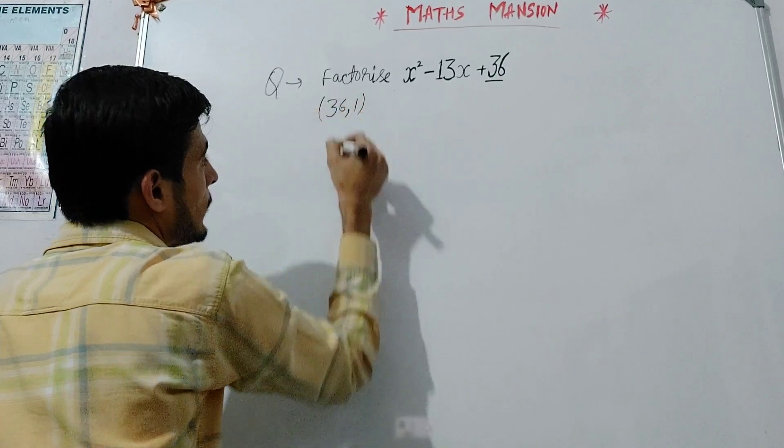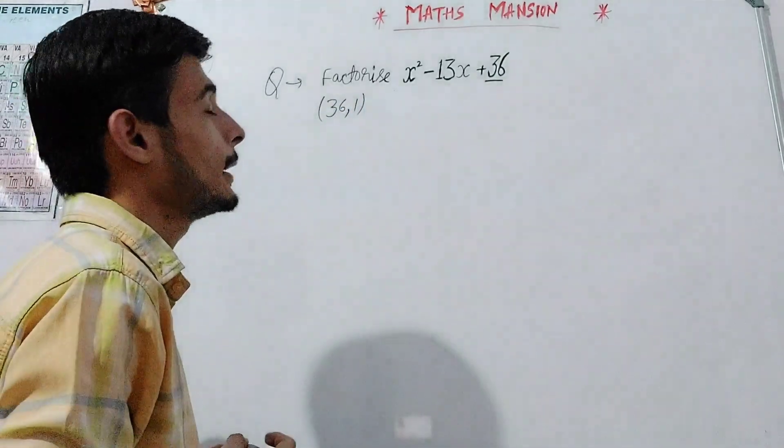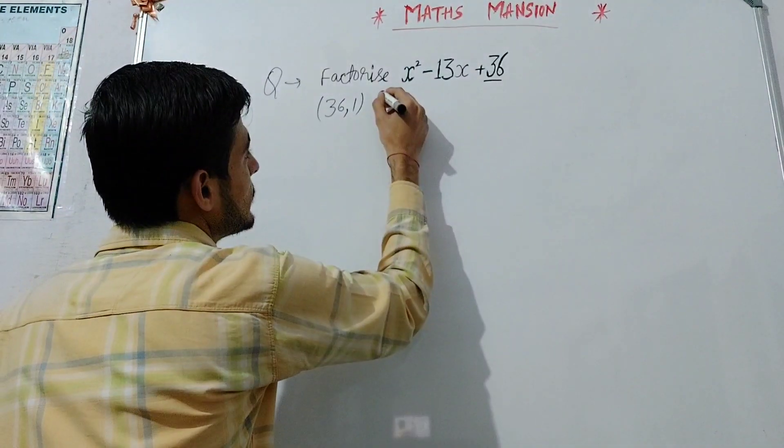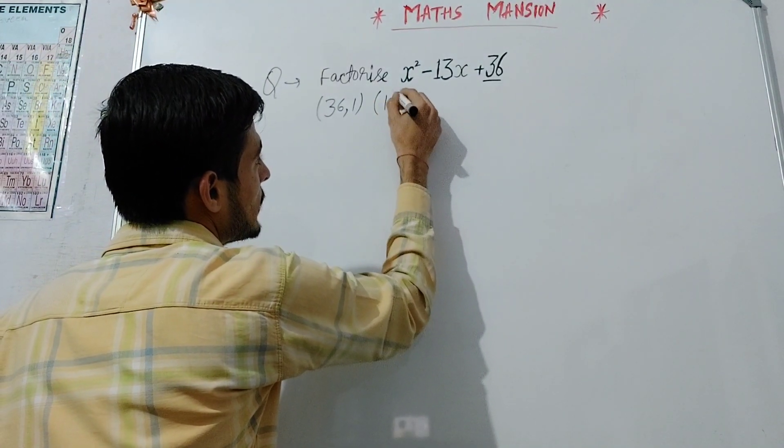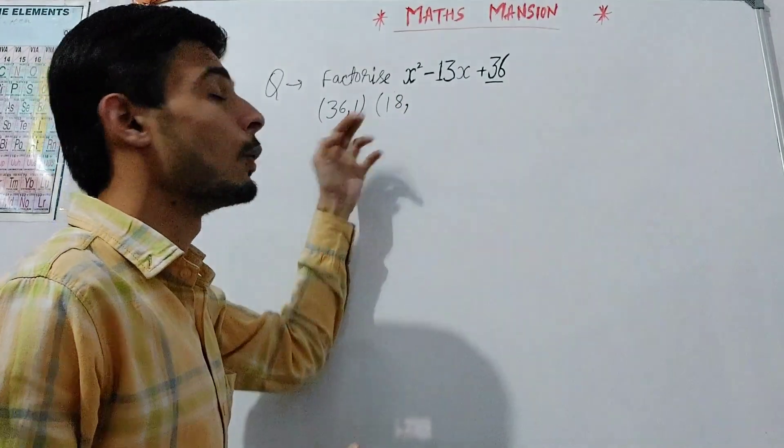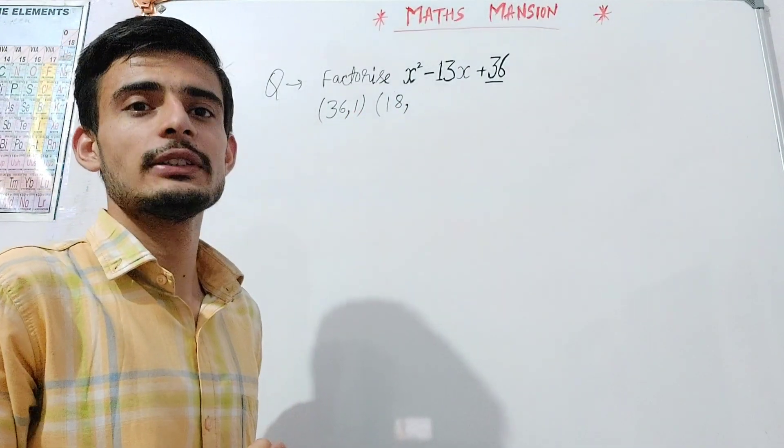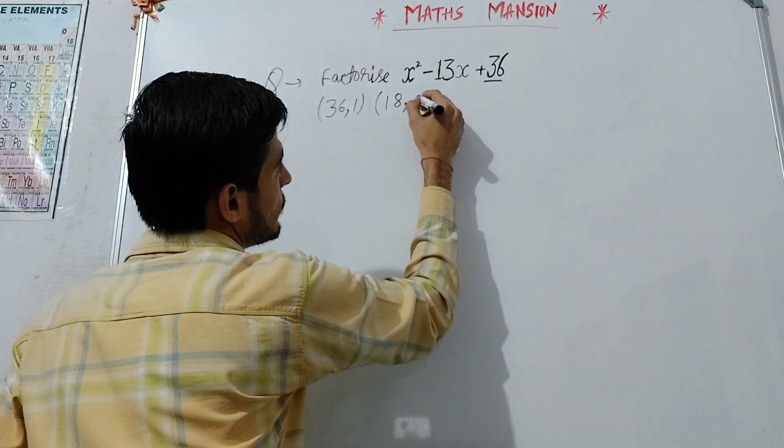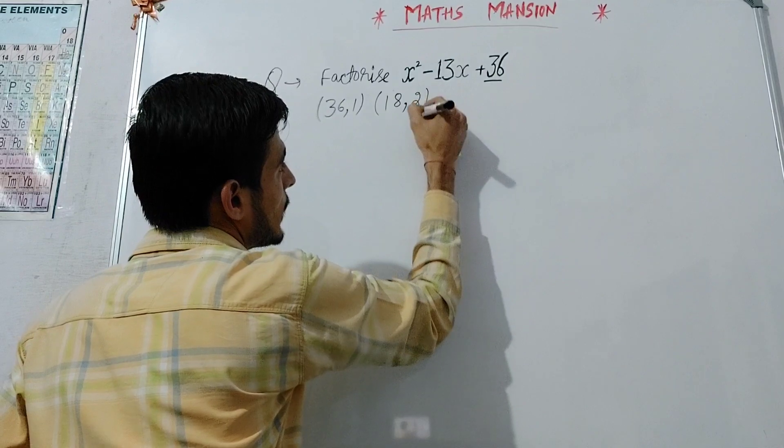Now, divide 36 by 2. Dividing 36 by 2, we get 18. And multiply 2 with 1. Multiplying 2 with 1, we get 2.